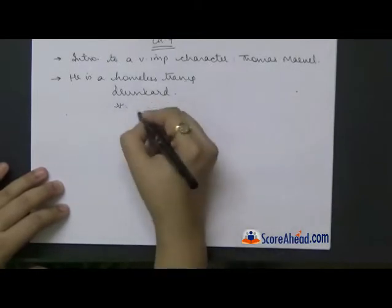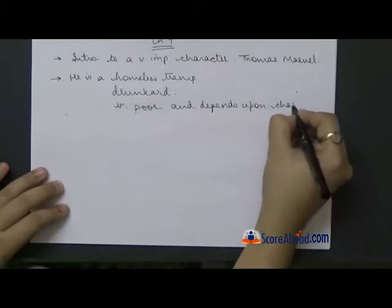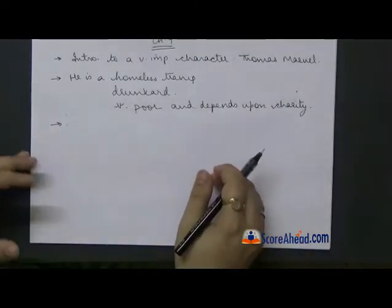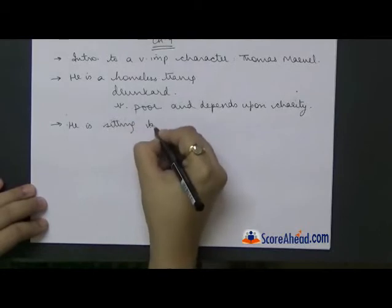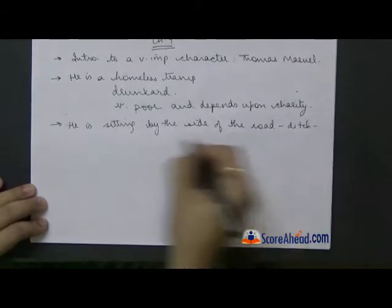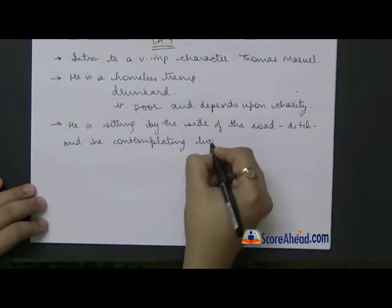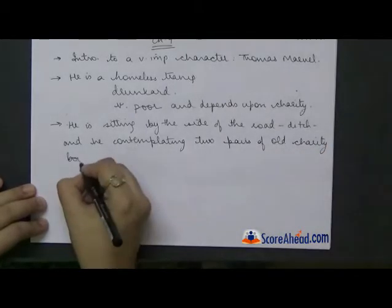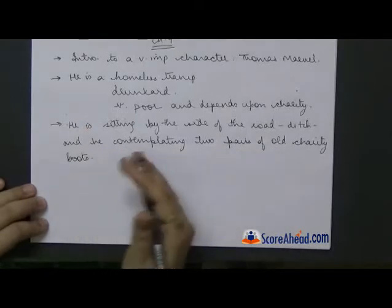He is a drunkard — he is mostly drunk. He is very poor and depends upon charity. His condition is more or less like that of a beggar who depends on charity and does no work to sustain himself. When we meet him, he is sitting by the side of the road, contemplating two pairs of old charity boots. Both of them are in poor condition and he is thinking which ones are better to wear.